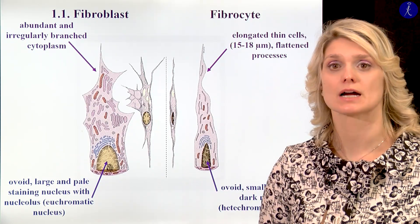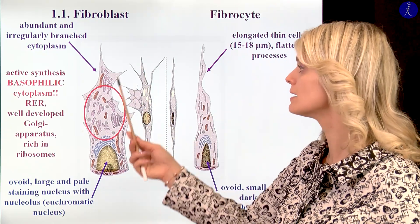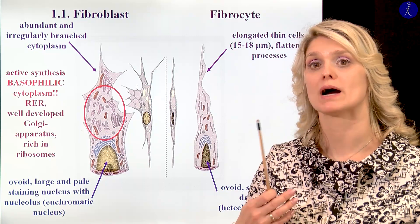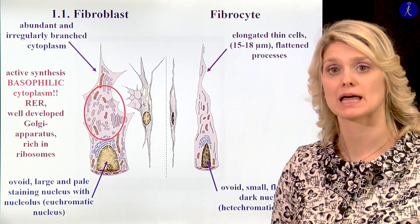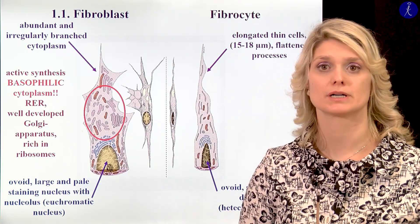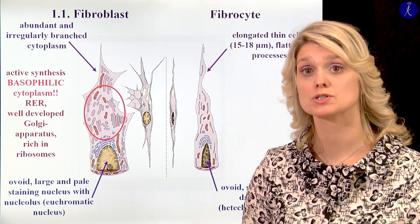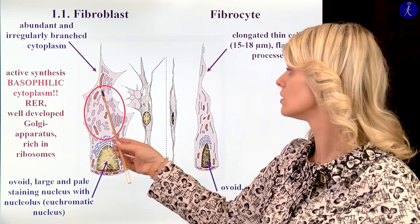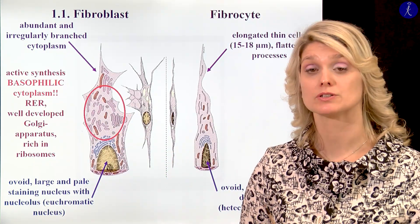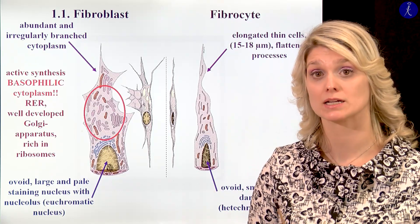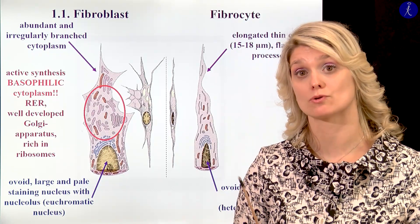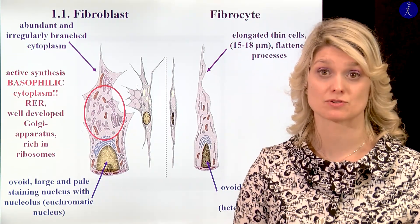If you see the cytoplasm of the cells — because the fibroblasts are active cells — they have a lot of mitochondria within the cytoplasm, a well-developed Golgi apparatus, a lot of ribosomes, and of course rough endoplasmic reticulum, which is really important for the synthesis of different molecules. Because of the rough endoplasmic reticulum and the ribosomes, these cells are basophilic.